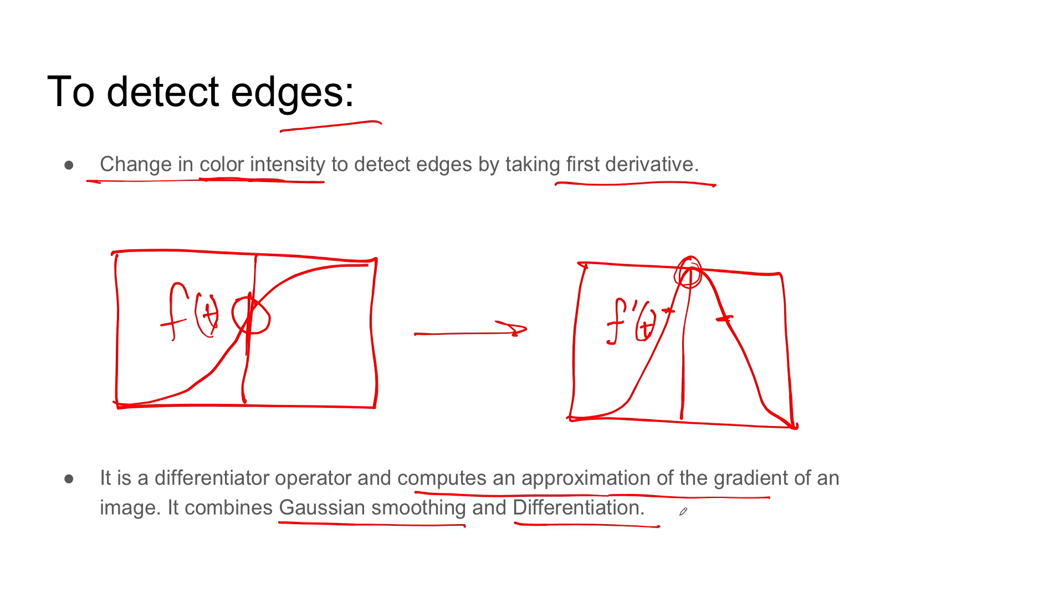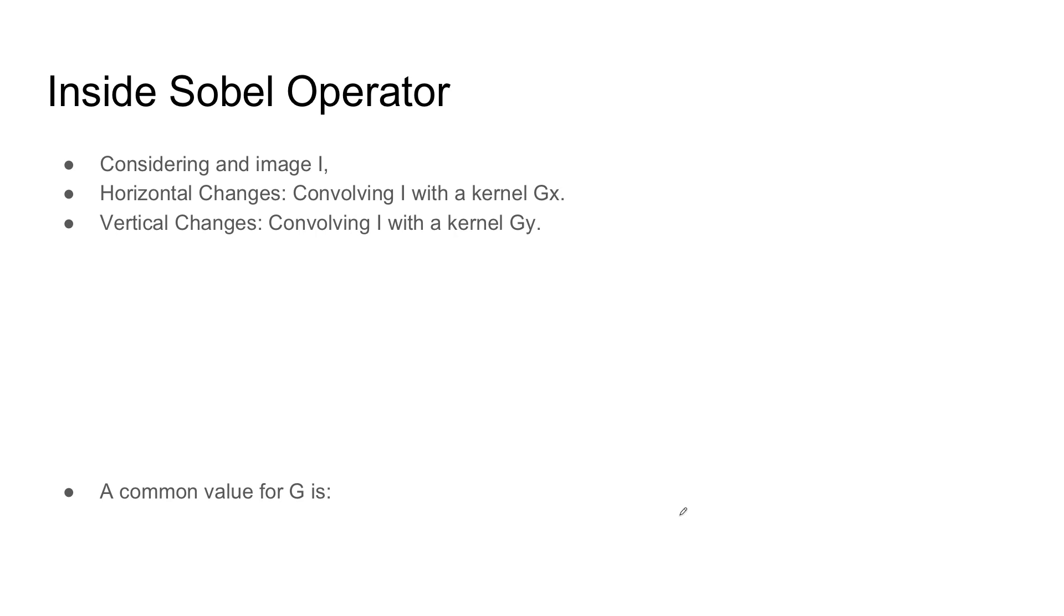So what happens inside Sobel operator is a very simple thing. Let us consider we have an image I. The horizontal changes would be convolving I with kernel GX and vertical changes can be found by convolving I with the kernel GY.